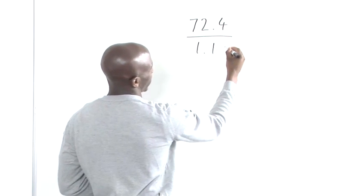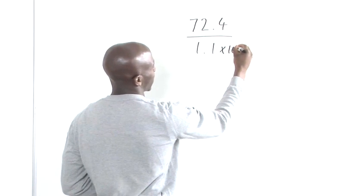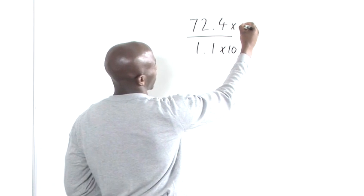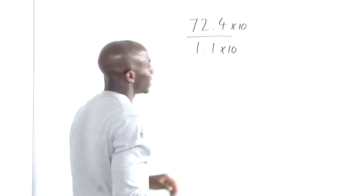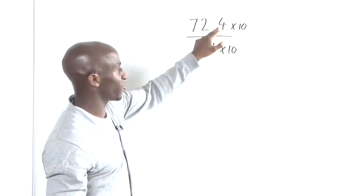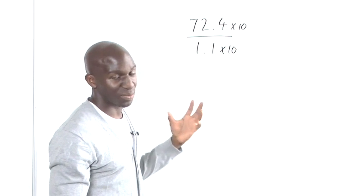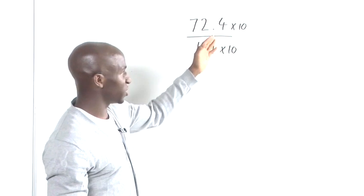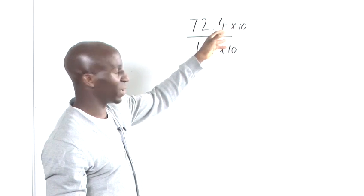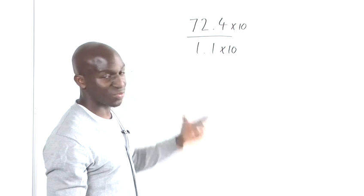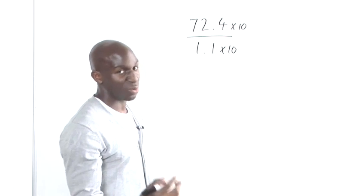So this has the equivalence of multiplying by 10. This has the equivalence of multiplying by 10 also. Now you haven't changed the fraction in terms of its weight, but you've changed the actual numbers in the fraction. So you've just basically changed the equivalent fraction.